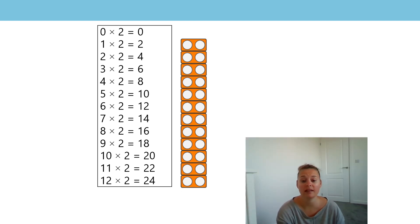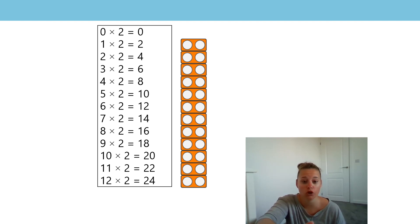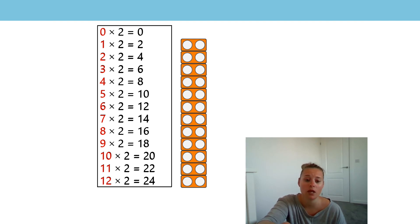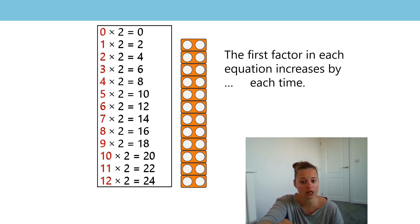I noticed three things, and I wonder if you noticed the same things as me. The first thing I noticed was about the first factors. Can you see the first factors? They are red. As you go down the list, the first factor increases by one. Why do you think it is increasing by one? That's right — because we add one more two each time. So the first factor in each equation increases by one each time.